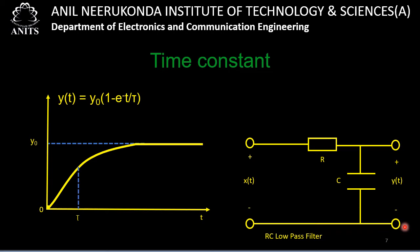At t = τ, the output is 1 − e^(−1) = 0.632 times Y₀. So at t equal to τ, y(t) is 63.2% of its final value Y₀. Therefore, τ (time constant) is defined as the time required for the output to reach 63.2% of its final (maximum) value.